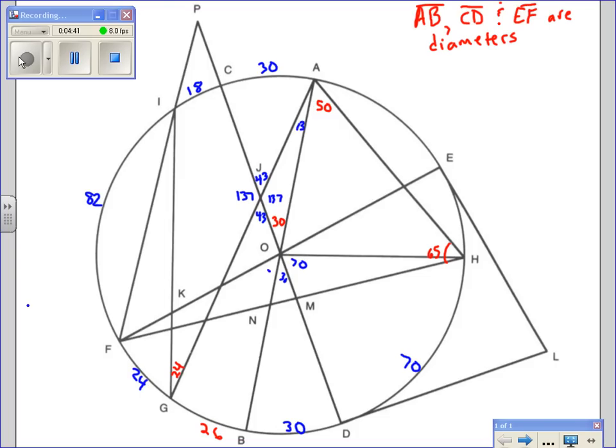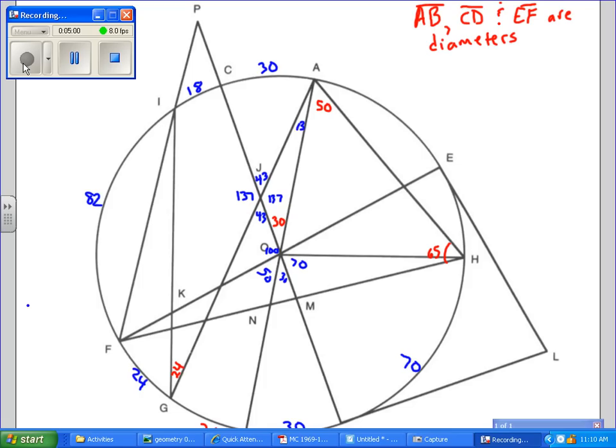This one next to the 30 opens up to an arc of 24 and 26 which makes 50, so this one here must be 50 degrees. And then I see that I have a diameter AB which makes 180, I already have a 50 and a 30, which means that this angle here is 100, which makes sense because its arc was 82 and 18, so that makes that 100 valid.